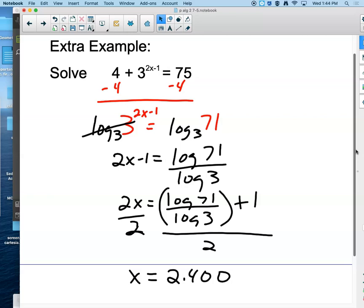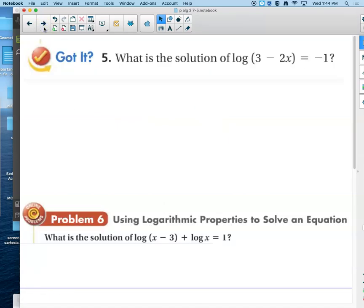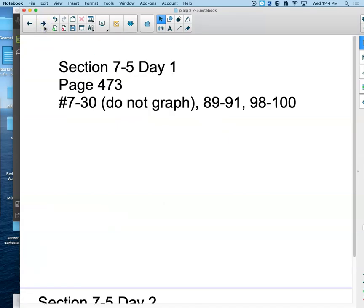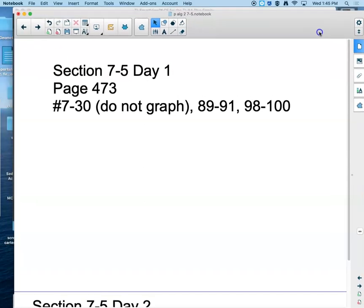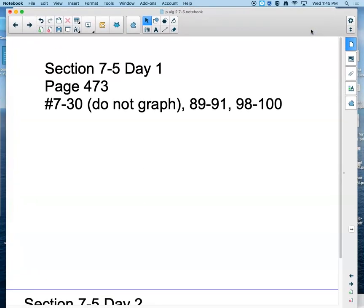Those were all our exponential equations. We'll start with example 4 when we come back on Monday. We'll see one more exponential, and then we have to talk about the other part of our objective, which was solving those logarithmic equations. But this is a good place to stop and do a little homework. We're not going to do any of the solving by graphing. We want to use our new skills and our new change of base formula for 7 through 30. And then 89 to 91 and 98 to 100 with a little bit of review in there. This is the lesson for Friday, May 14th, Section 7-5, Day 1.